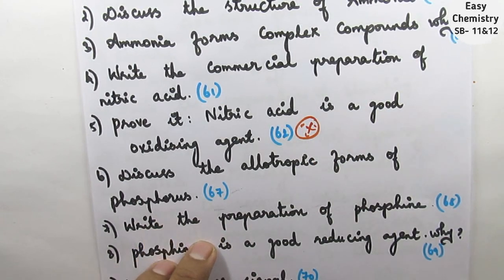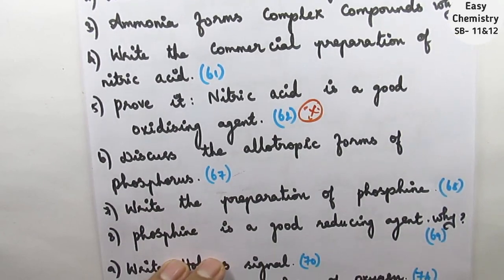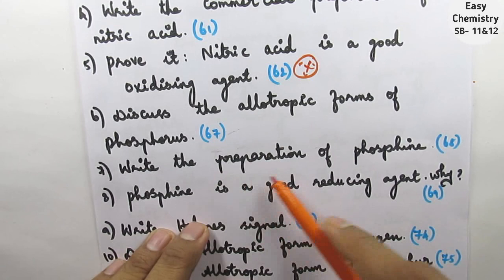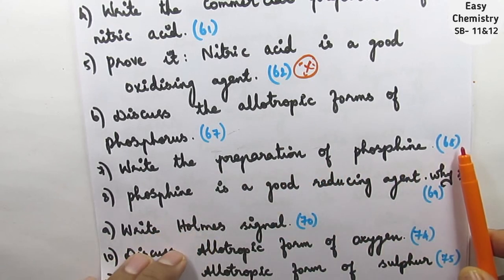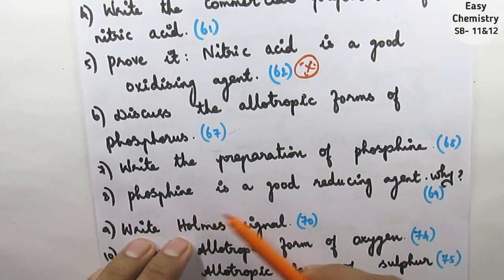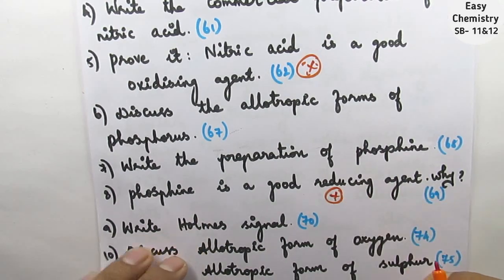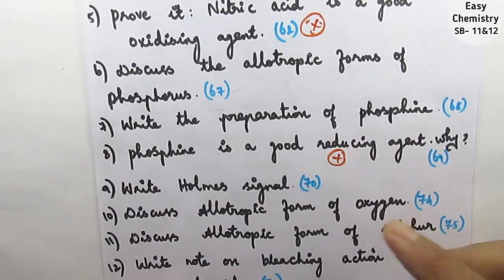Question number 6: discuss the allotropic form of phosphorus, page number 67. Write the preparation of phosphine, page number 68. Phosphine is a good reducing agent, why? This is very important question. Question number 6, discuss the Holmes signal, that is very important.